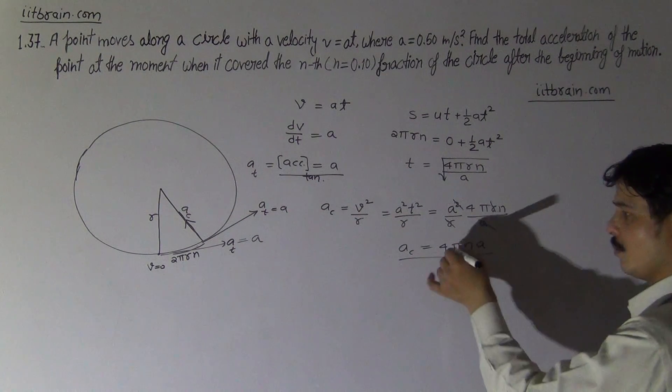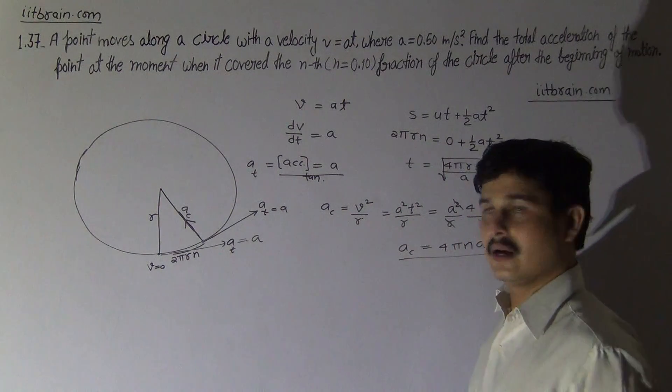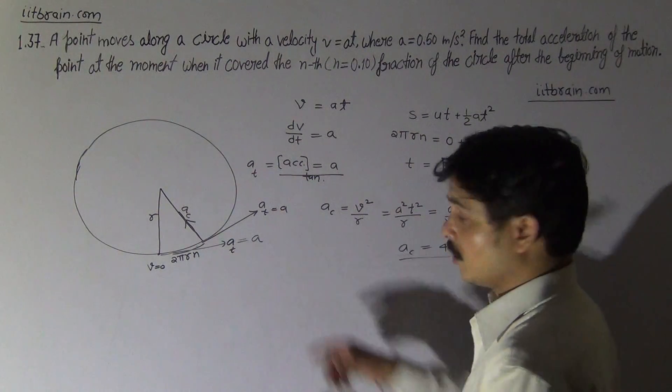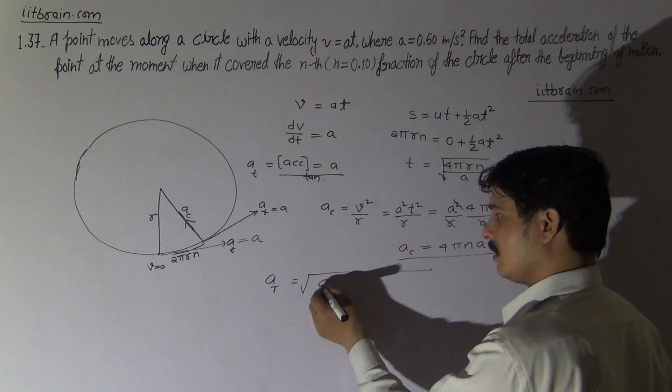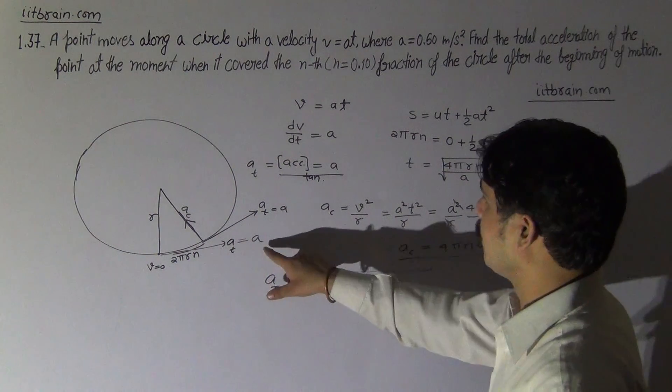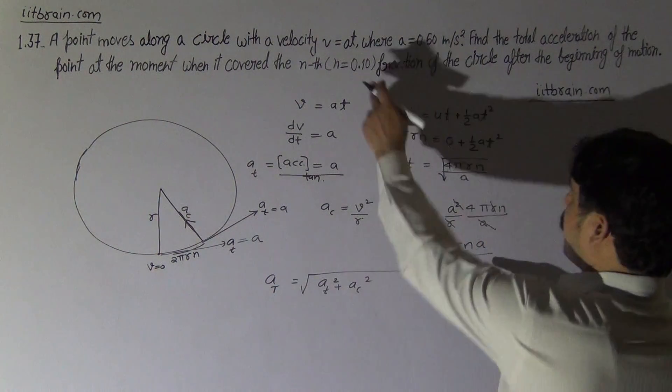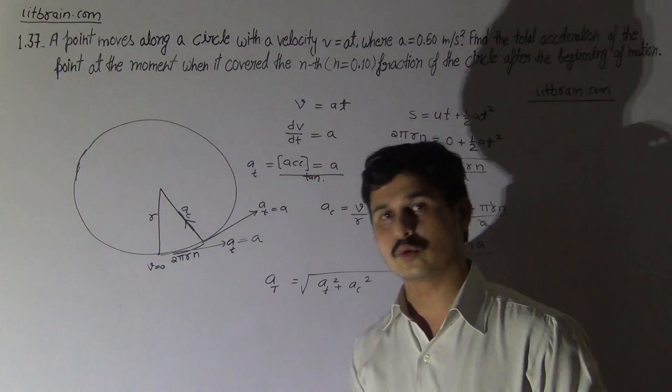Centripetal acceleration is 4πna and tangential acceleration is a. So overall acceleration of the particle a_total is √(a_tangential² + a_centripetal²). Now put the value of n as 0.1 and that of a as 0.5 and we get the answer. This is the way to solve this problem. Thank you.